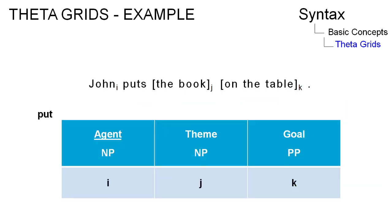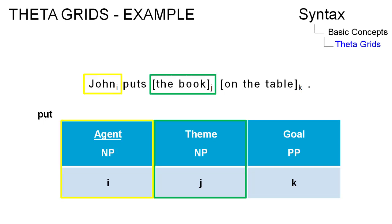In the example 'John puts the book on the table,' we have the ditransitive verb 'put' that requires three arguments: an agent represented through a noun phrase — in this case John — the theme 'the book,' also a noun phrase, and the goal 'on the table,' a prepositional phrase.